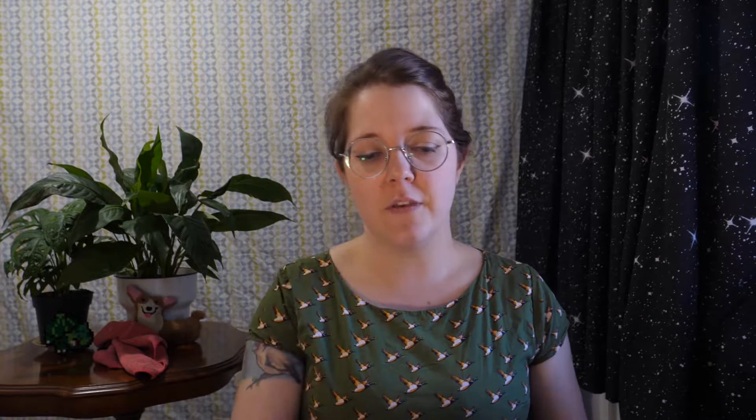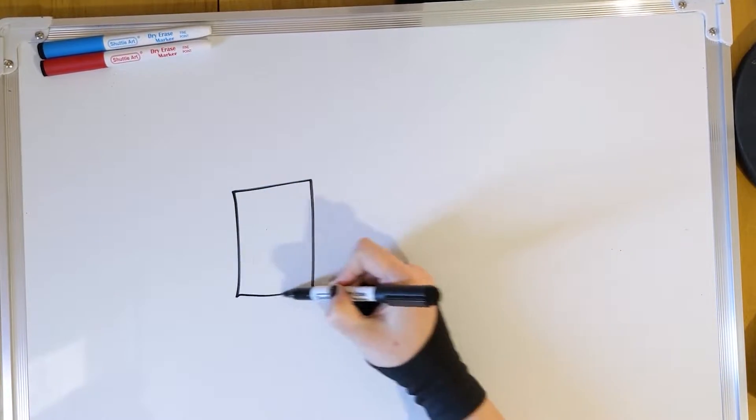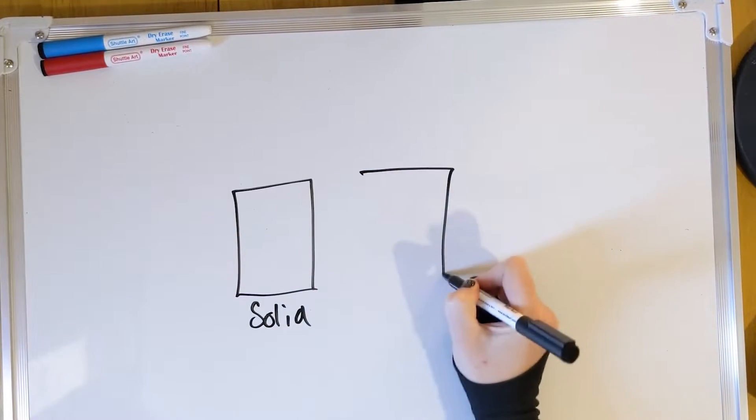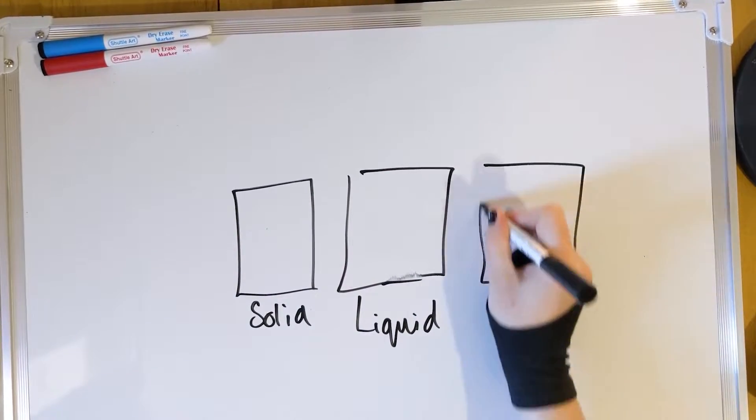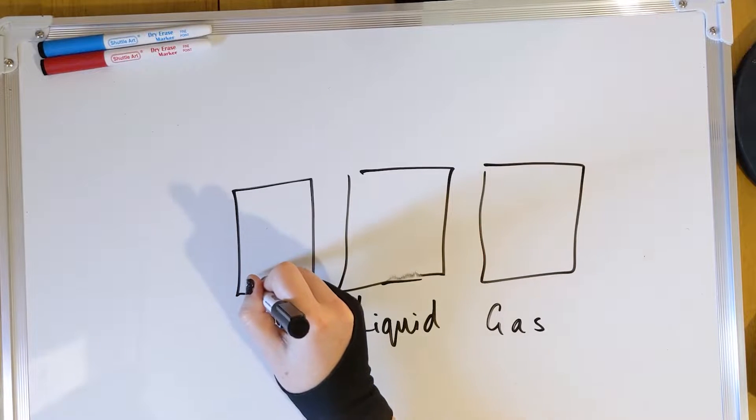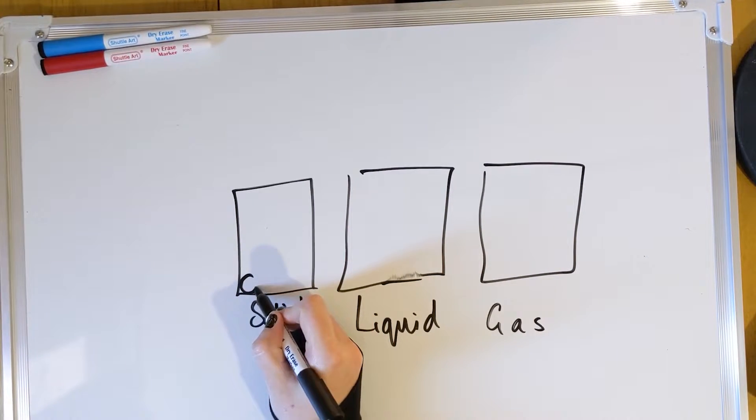Before we get into new information about what happens in terms of energy when things change state, it's important to go back to basics and see if we can remember what the particles look like in a solid, liquid and gas. I challenge you to pause the video, draw yourself three boxes like I'm doing on the screen — one for solid, one for liquid, one for gas — and using circles, show me what you think the particles look like. Pause the video, don't cheat.